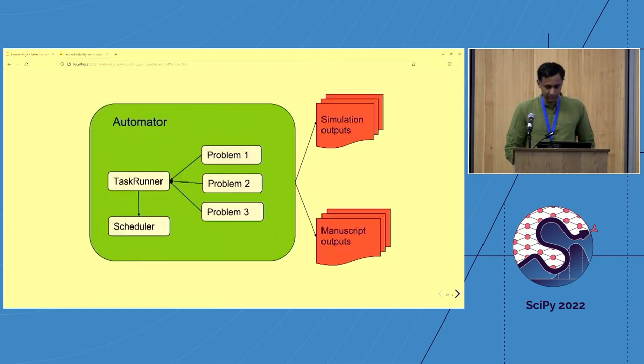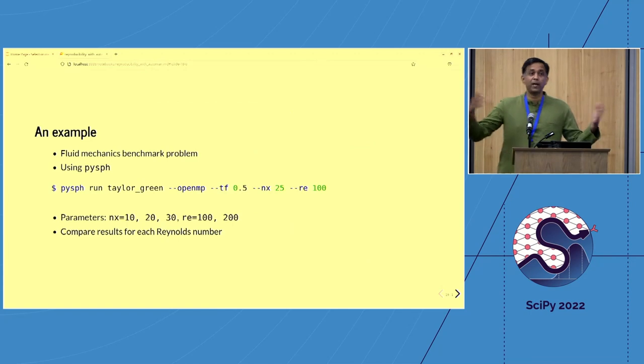So what I want to do now is I want to do a parameter sweep. I want to run this for different resolutions. Say nx is 10, 20, 30. Usually I'll pick much larger numbers, but it'll take forever to run. And I want to run it for two Reynolds numbers. So I'm just picking six cases that I would like to automate.